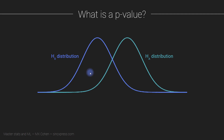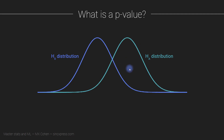Of course, some people gain weight and some people lose weight, but at the aggregate, population level, there is no overall effect of the quarantine on people's weights. On the other hand, if the alternative hypothesis is true, we still expect some variability, but we expect the distribution of people's weights to be shifted to the right because they're gaining a little bit of weight.